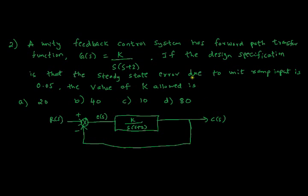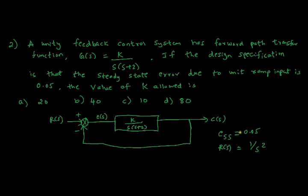The steady state error is already given as E_ss = 0.05, and we need to find the value of k. Also, R(s) is ramp, so the Laplace transform of unit ramp input is 1/s². Let's apply the steady state error formula: E_ss = limit as s→0 of s·R(s) / [1 + G(s)].